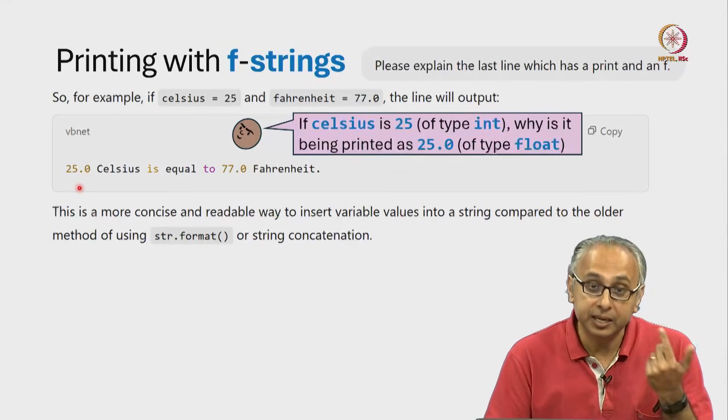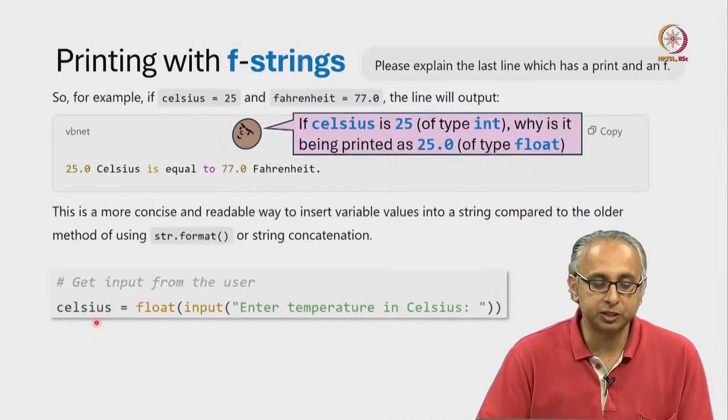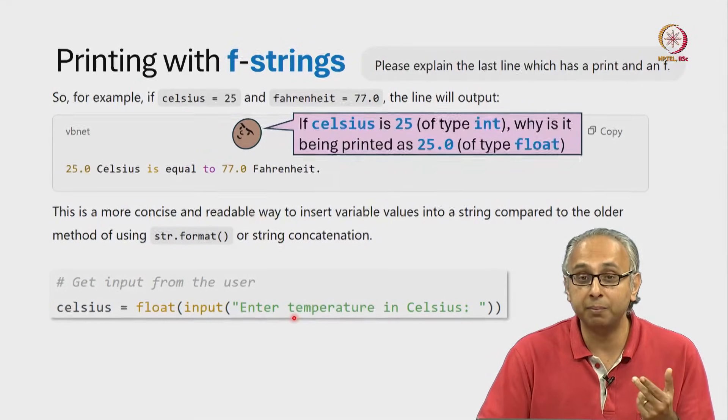Now, it turns out that in the code, as you might recall, the variable Celsius was initialized like this. It was assigned the value of float of input of something. Remember, this is evaluated firstly by evaluating the input function which returns a string.